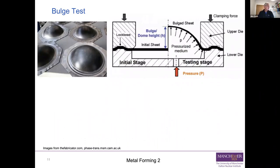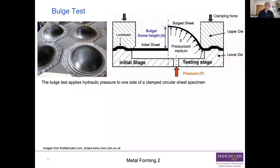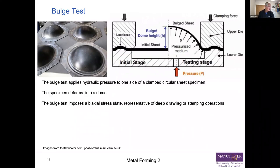In the bulge test, we take a disk of sheet, clamp it onto a die — a lower die — and clamp the sheet onto it with a ring (the upper die), clamping hard enough to pressurise the gap underneath the sheet. We then pump it up with fluid to pressure, which causes it to bulge. So hydraulic pressure is applied to one side of a clamped circular sheet specimen, it deforms into a dome, and that dome imposes a biaxial stress state — like blowing up a balloon — generating stresses in two in-plane directions, representative of what happens in deep drawing.